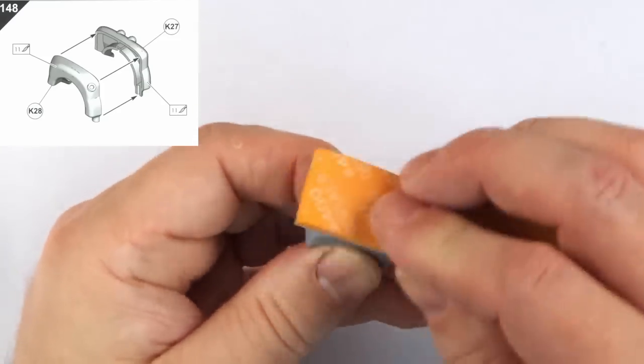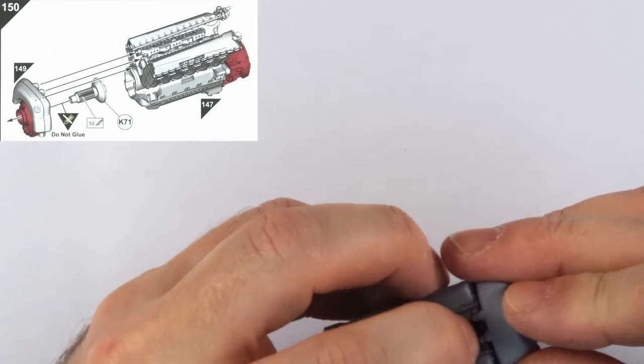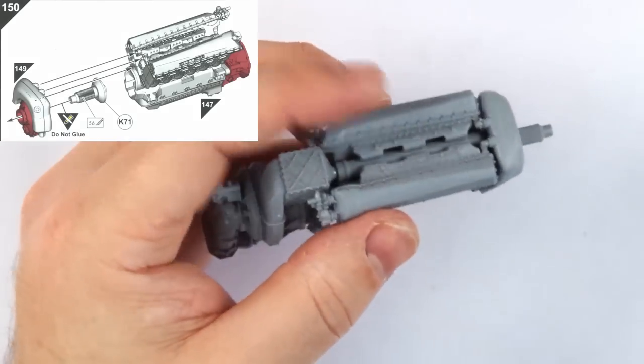So now it's time to go back to that coolant header tank. I've applied putty to the seam, now it has dried, I sanded it smooth before attaching it to the two cooler pipes on the engine.